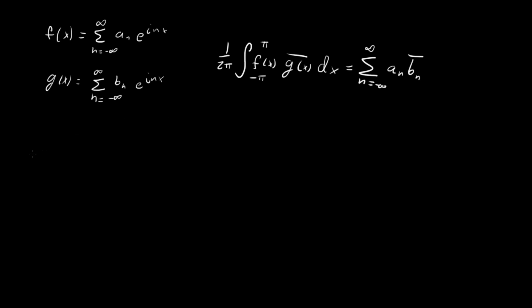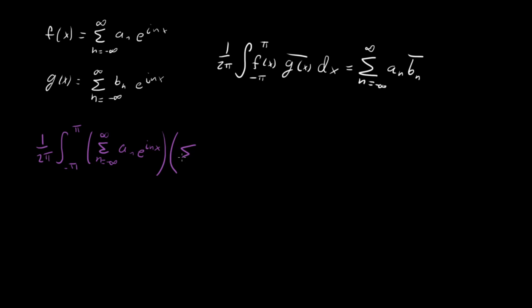Let's start with the integral term and show it equals the series. We have our integral, and instead of writing f(x) and g-bar of x, I'm going to substitute in their series. So we have the sum from n equals minus infinity to infinity of a_n e^(inx), and then for g-bar I'll change the index to m — so the sum from m equals minus infinity to infinity of b_m-bar times e^(-imx). We take the complex conjugate by putting a bar over b_m and a minus sign in the exponential. Then we have dx.